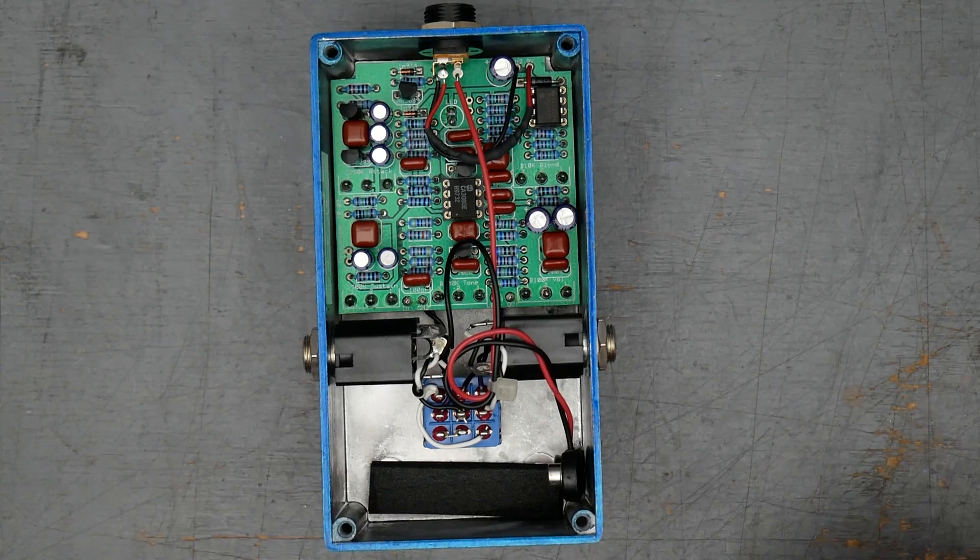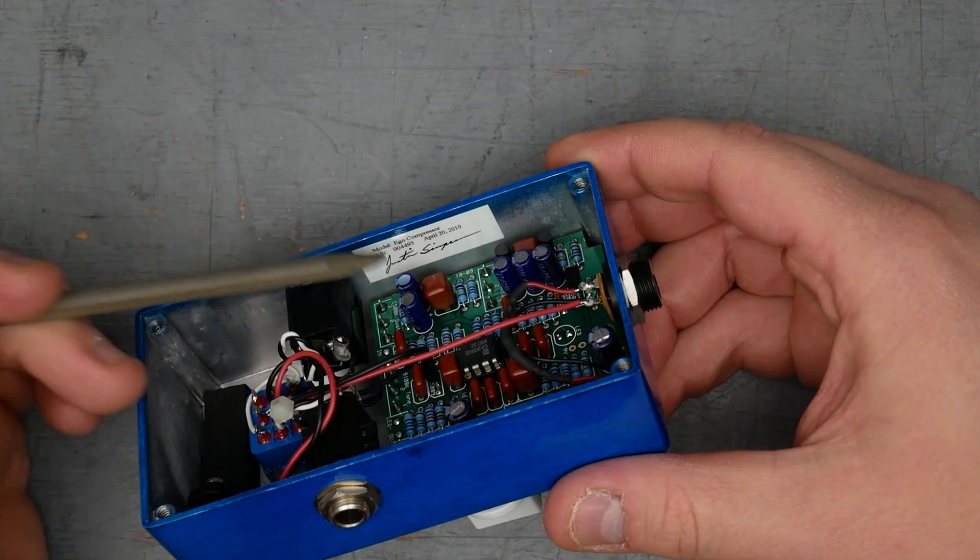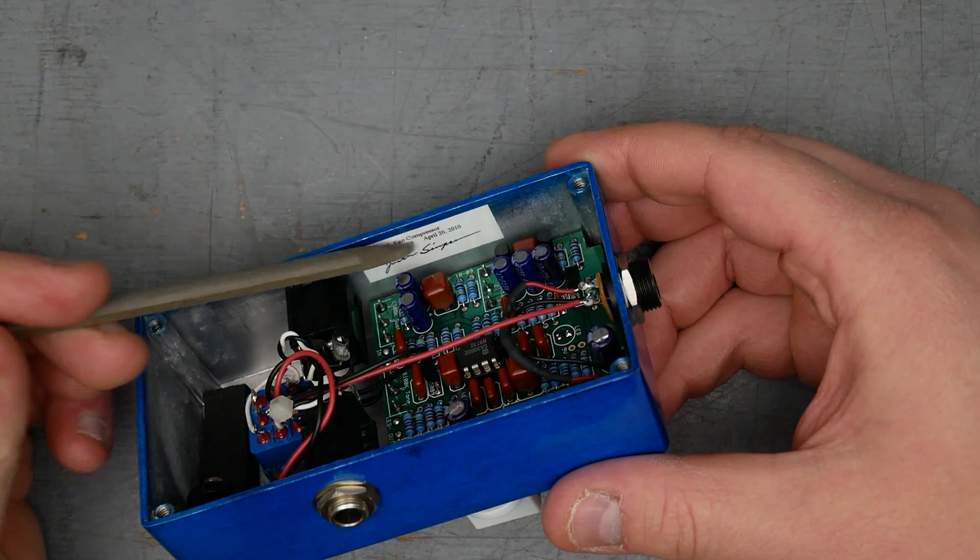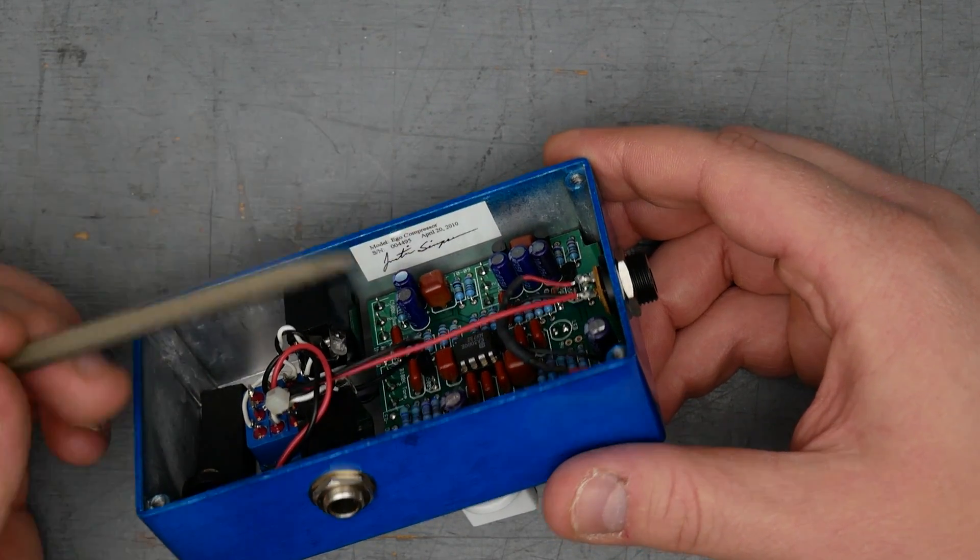All right, so here's the inside of the Ego compressor from Wampler. Here is the info sticker. Says model Ego compressor, serial number 4495 and April 20, 2010.